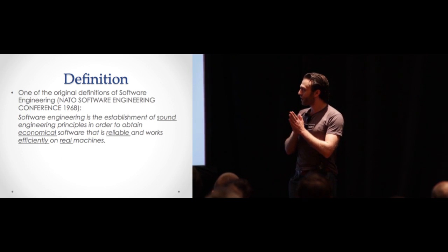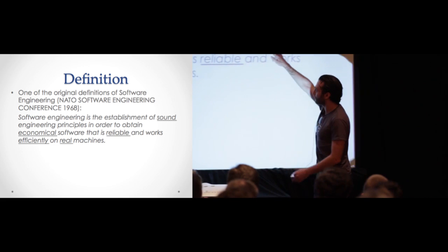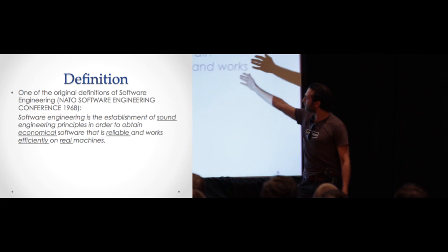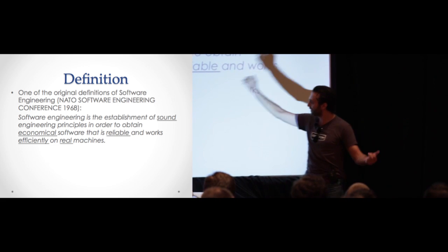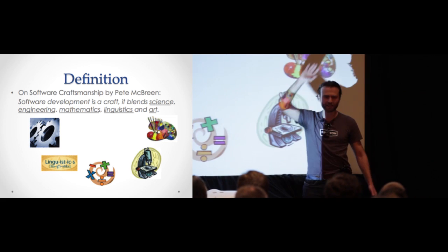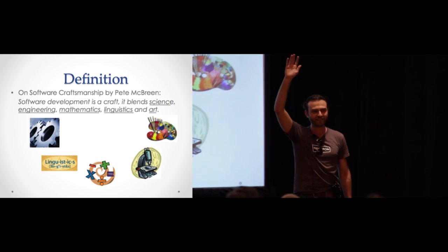Definition, according to one of the original definitions from the NATO Software Engineering Conference 1968, which was the inception of it, software engineering is the establishment of sound engineering principles to produce economical software that's reliable and works efficiently on real machines. Anybody disagrees with wanting that? Nope.